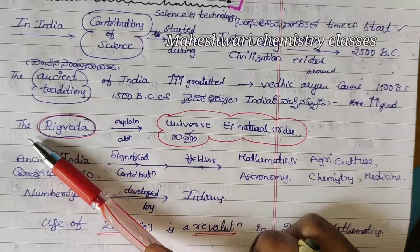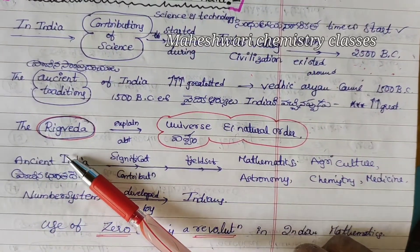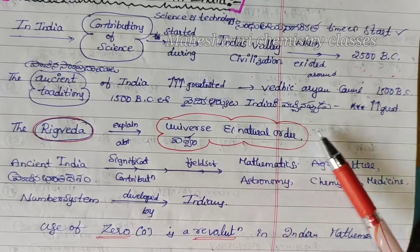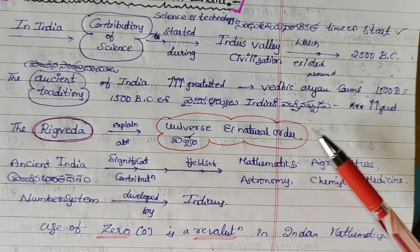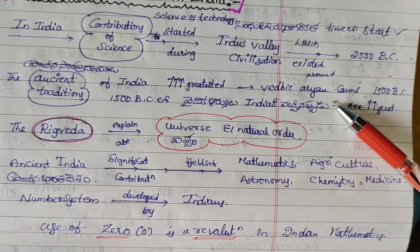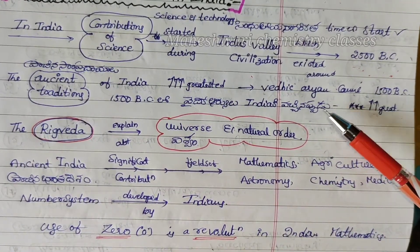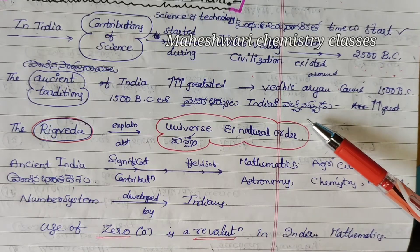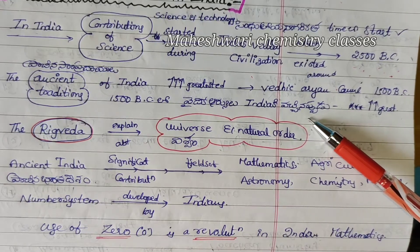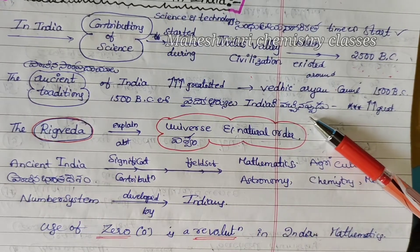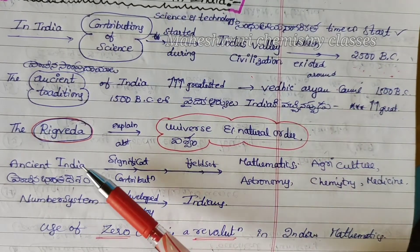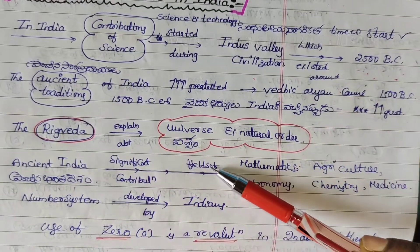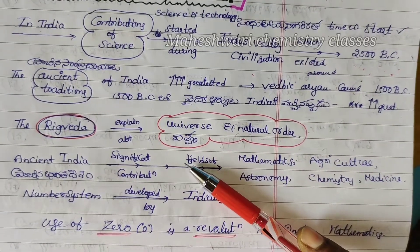The third point: The Rig Veda explained about the universe and the natural order. The four Vedas are Samaveda, Atharvaveda, Yajurveda, and Rigveda. The Rig Veda explained about the vision of the cosmos.